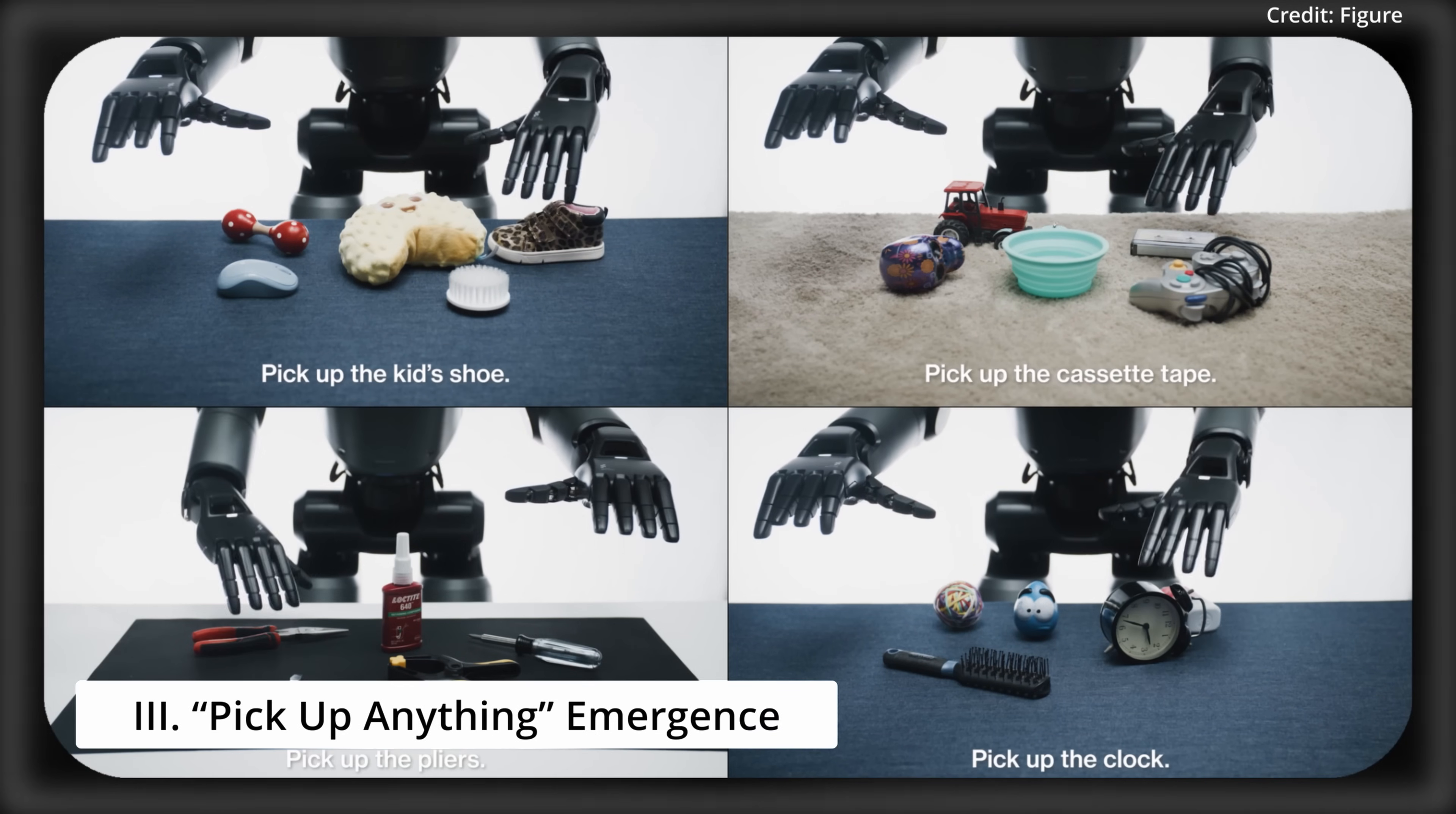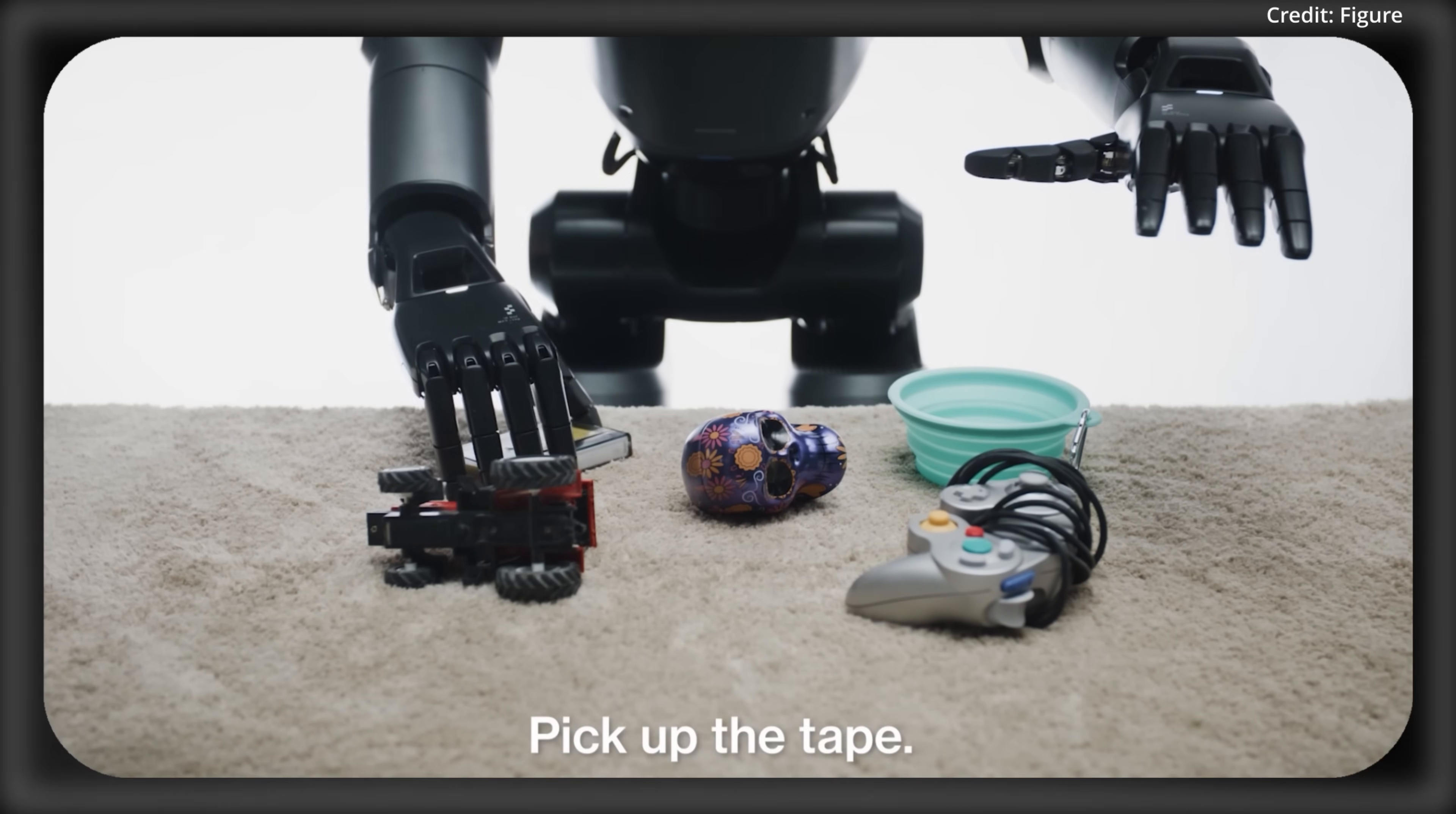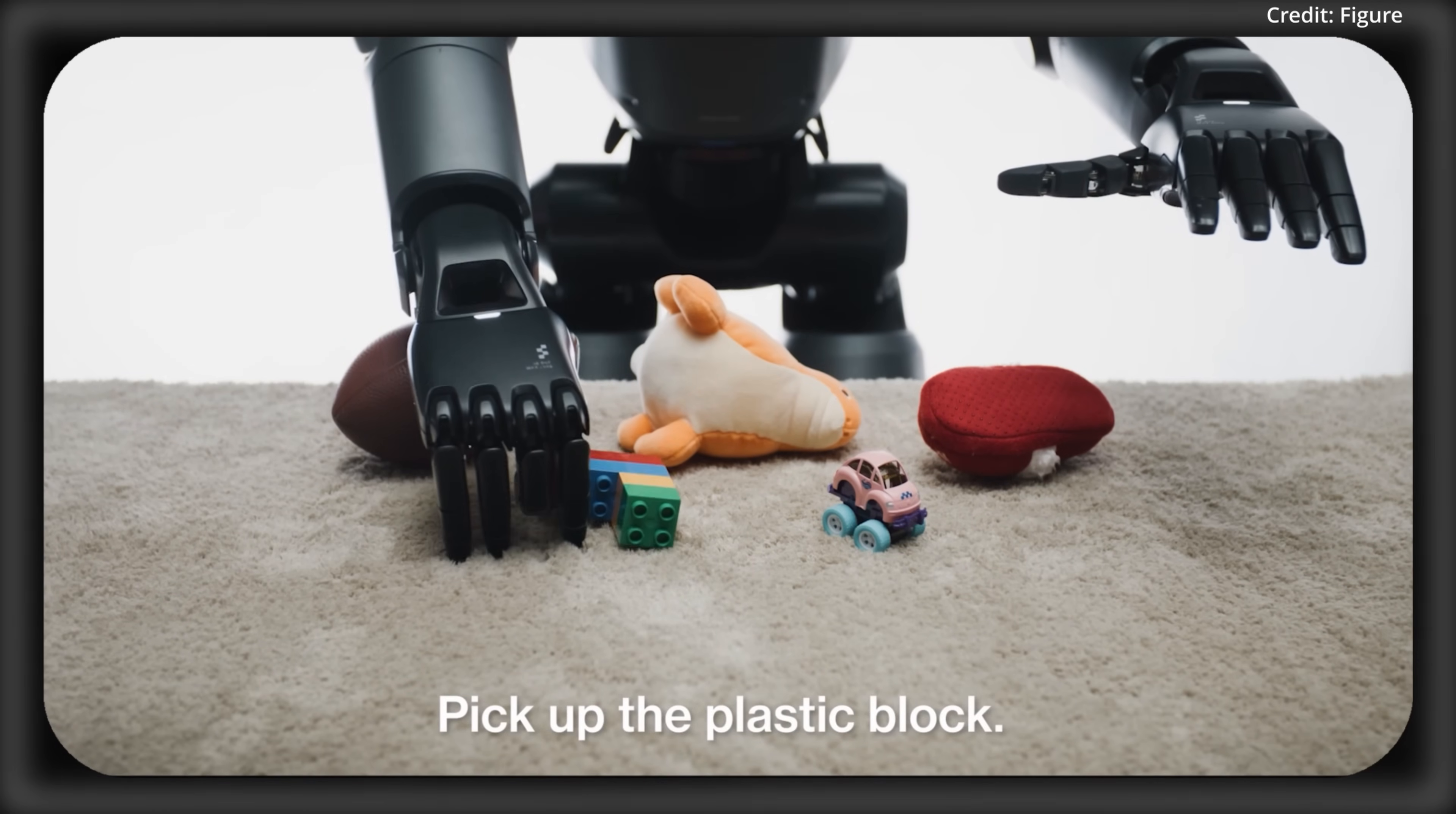Number three: The Pick-Up-Anything Emergence. One of Helix's standout features is its emergent ability, allowing Figure robots to pick up nearly any small household object with a casual verbal command to pick that up. And tests show it can handle thousands of novel items, including glassware, toys, tools, and even messy clothes, all in cluttered environments with no demos required.